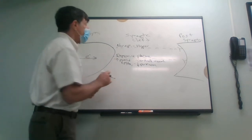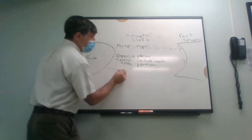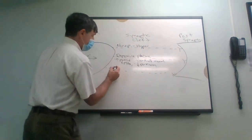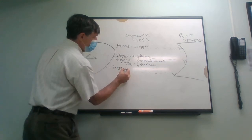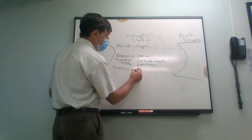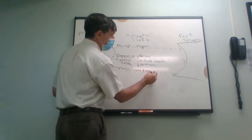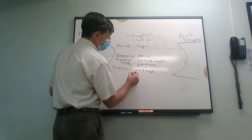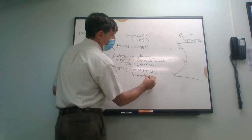Another neurotransmitter that can be released at the receptor is called serotonin. We know that serotonin helps regulate mood and anxiety. Not enough of it, and you may be depressed and/or anxious.